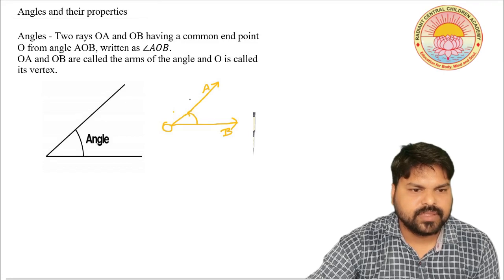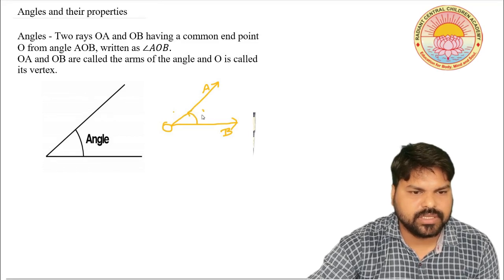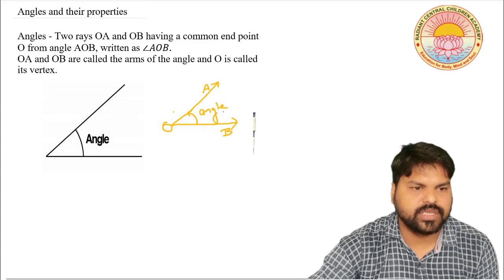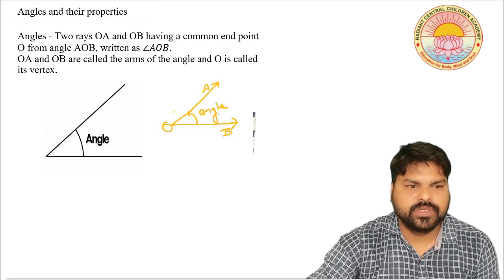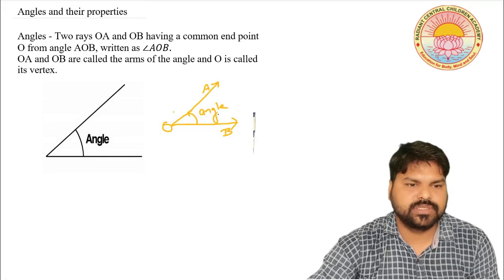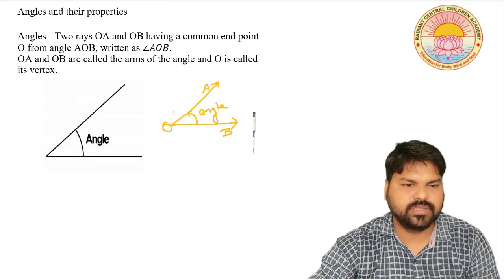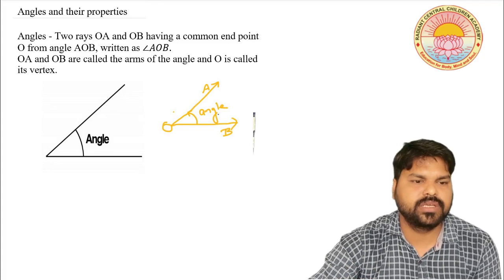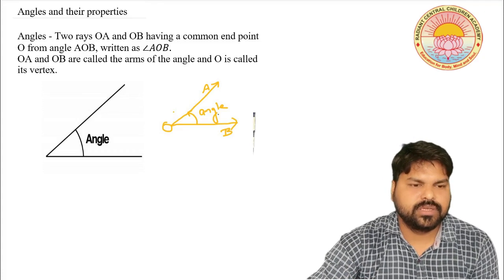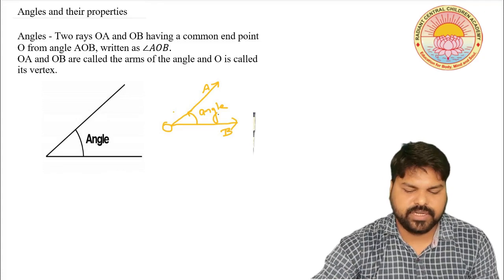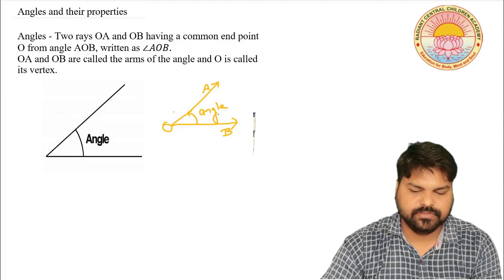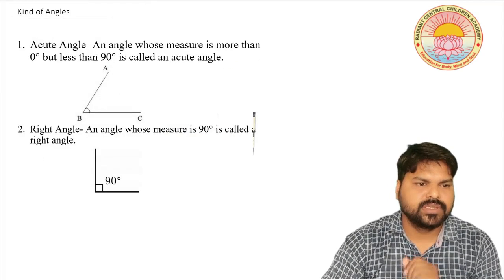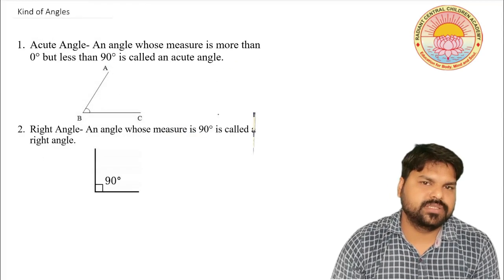This is the figure that we call an angle. These are OA and OB, and we also call these the arms of the angle. O is the vertex.